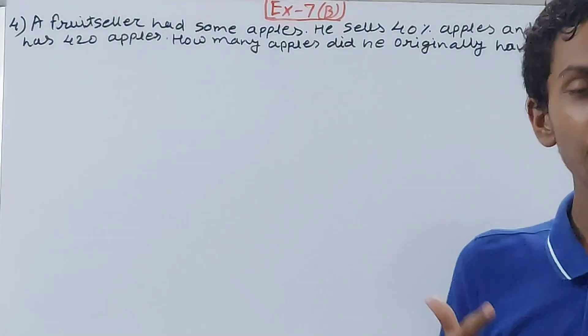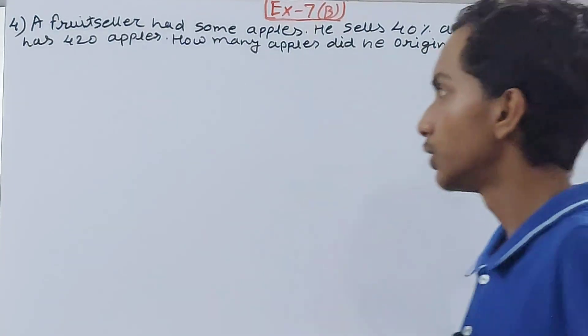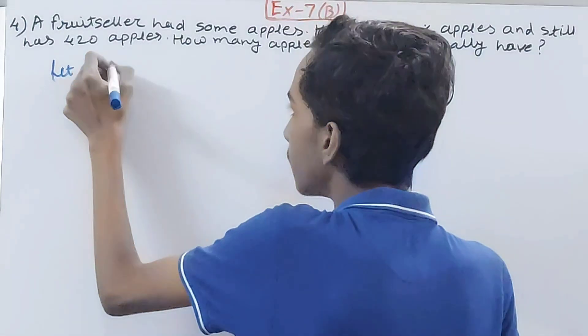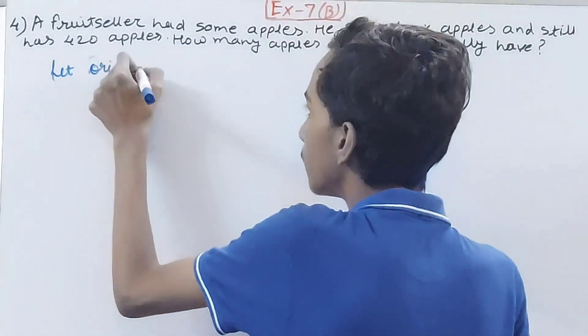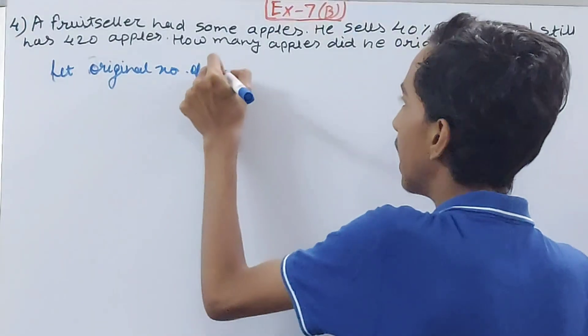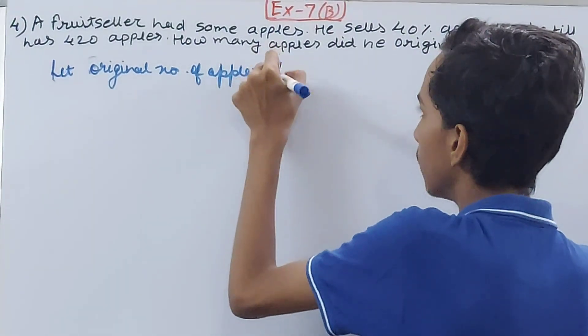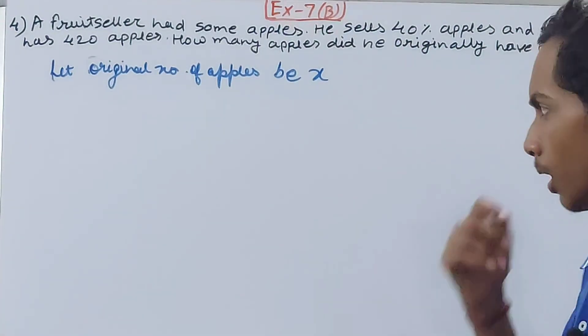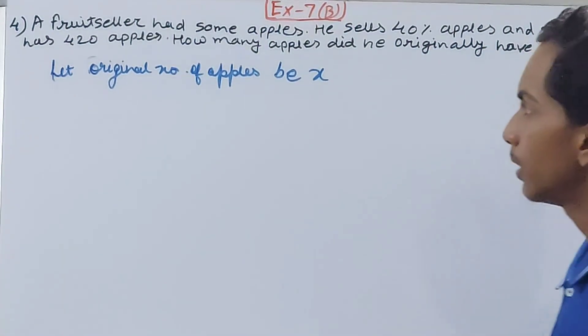So we have to find the original number. What we will do: let the original number of apples be x. Let him have x apples, okay?